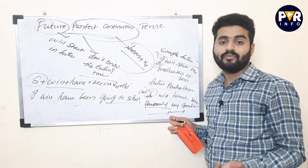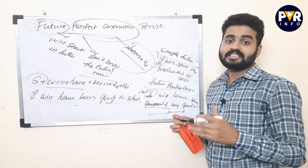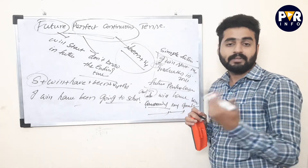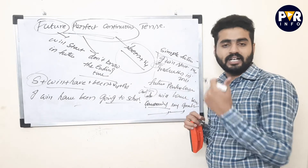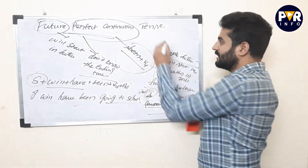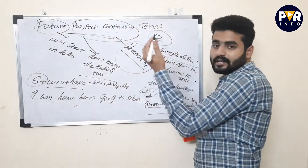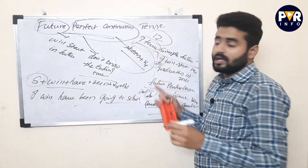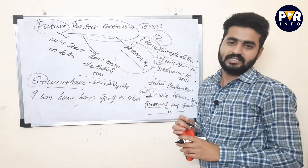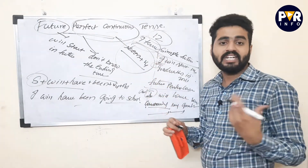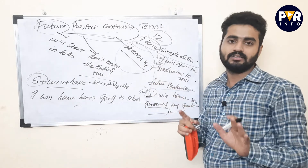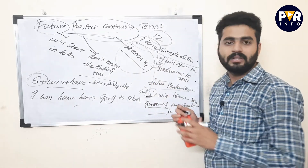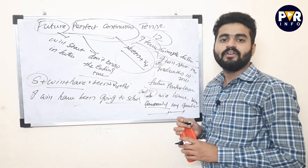So this covers tenses — present tense, past tense, and future tense. Each has four subtypes, giving a total of 12 tenses. Seven of those tenses are very important. I will explain the differences between all tenses in further videos. If you like this video, please subscribe to our channel PVR Info. Thank you so much.